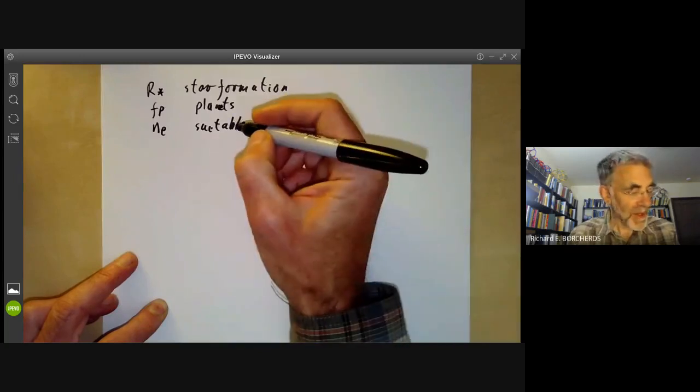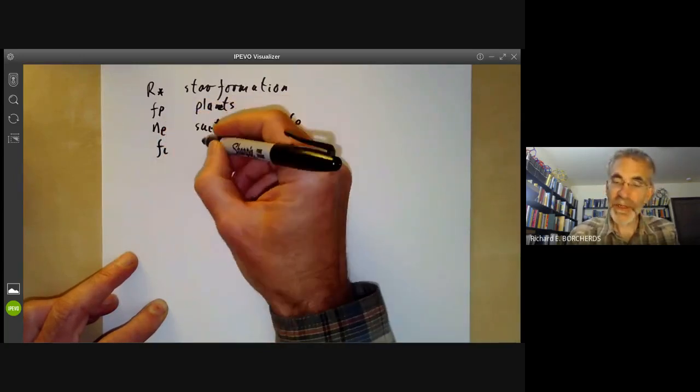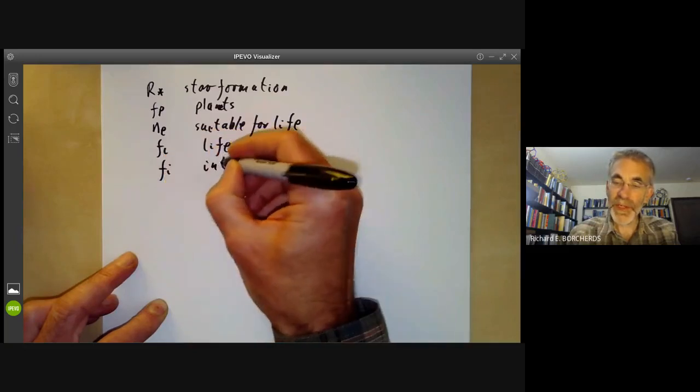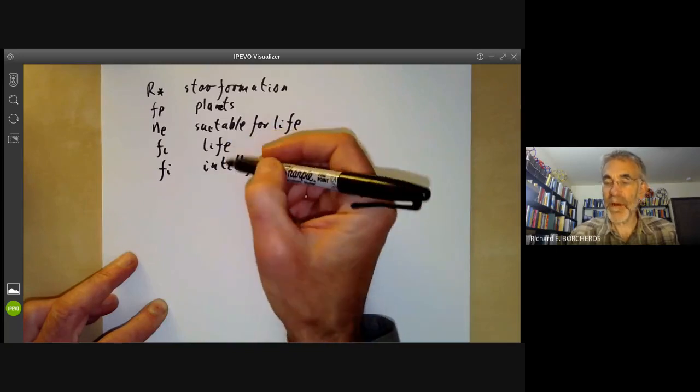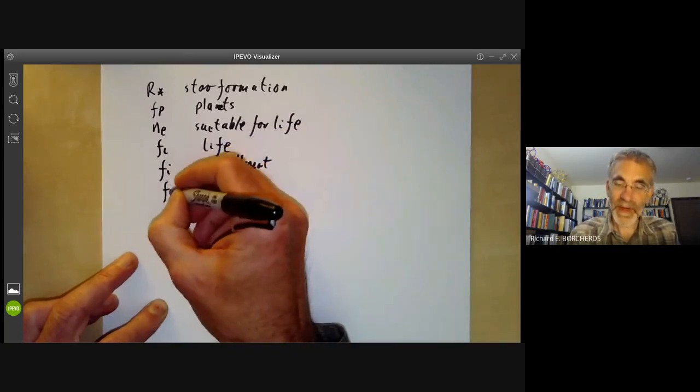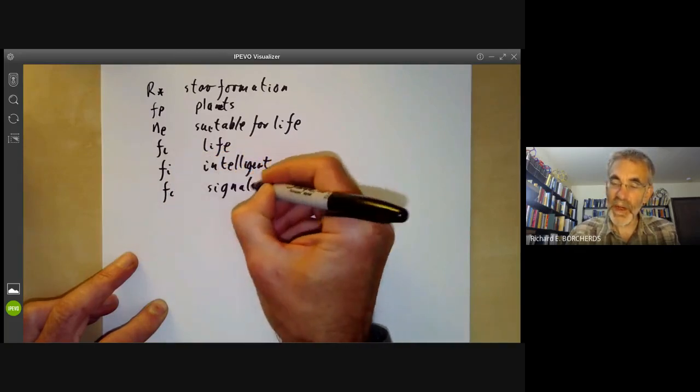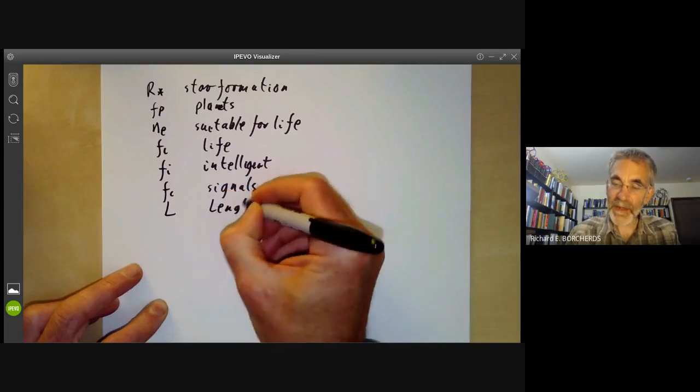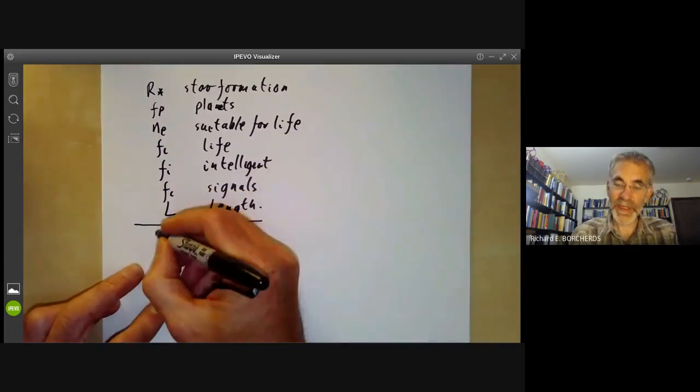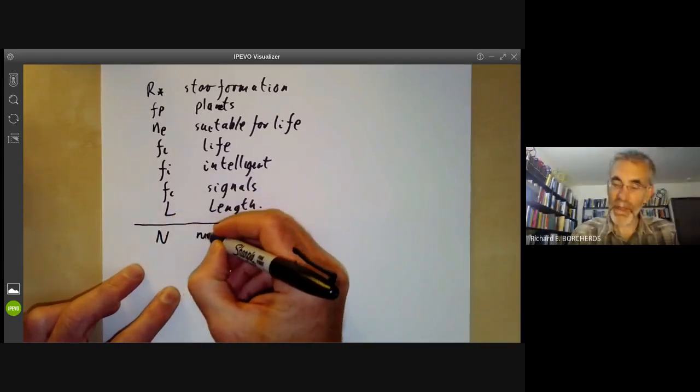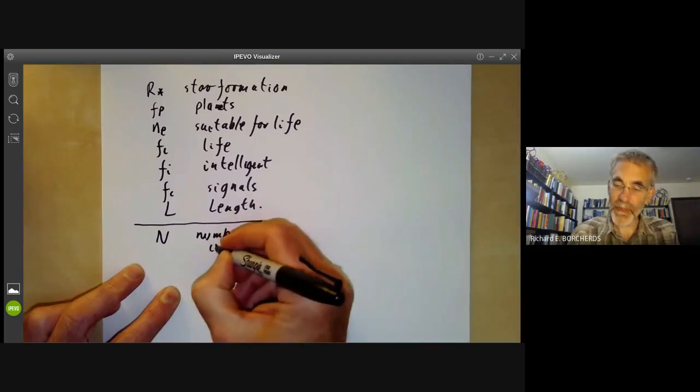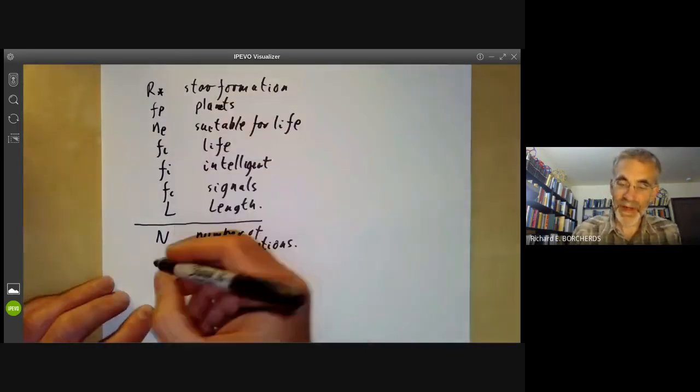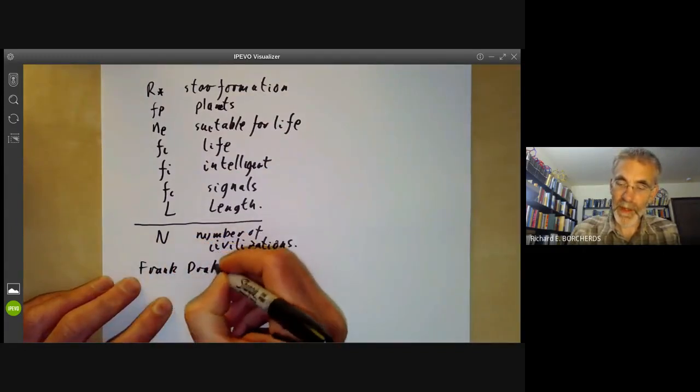And then we have a number Fl, which is the chance that a planet that is suitable for life will actually develop life. We have a factor Fi, which is the chance that life will develop intelligent life. And then we have a factor Fc, which is the chance that intelligent life will develop enough to be able to send signals. And finally, we have a factor L, which is the length of civilization. And if we multiply all these together, we get a number N, which is an estimate for the number of civilizations in the galaxy we might be able to communicate with. So this was introduced by Frank Drake in about 1961.